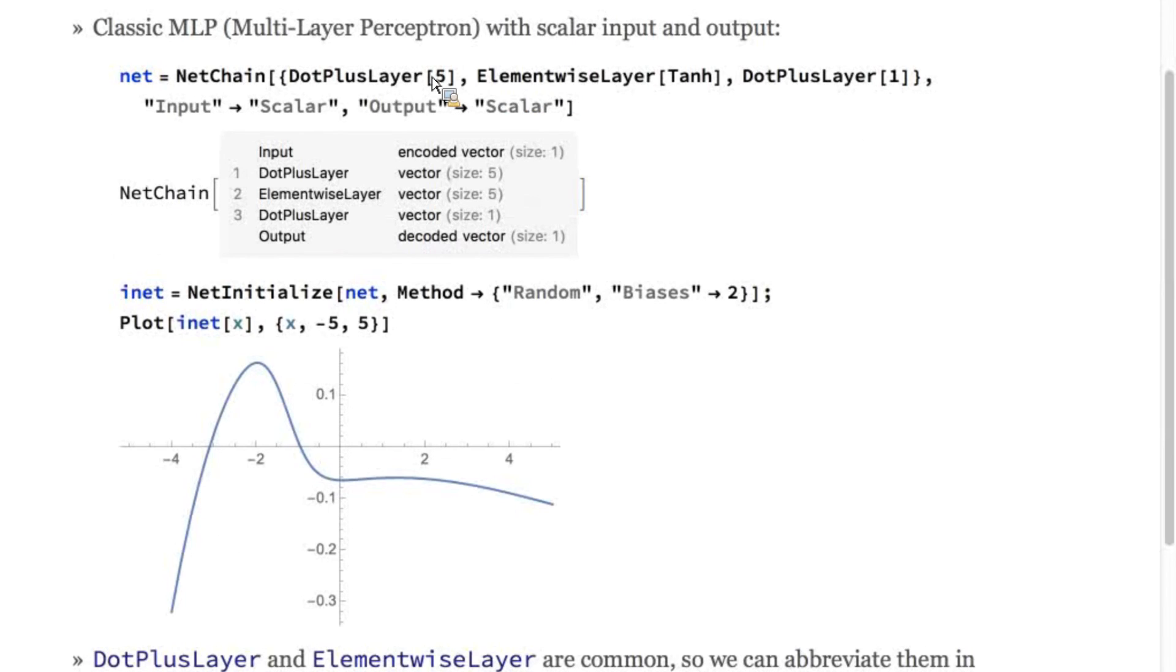Here's a simple example of a net chain in action. It contains a dot plus layer, a non-linearity, and another dot plus layer. The final output is a vector of size one, which we decode as a single scalar value. Here, we've plotted the behavior of this net when the weights are chosen randomly.